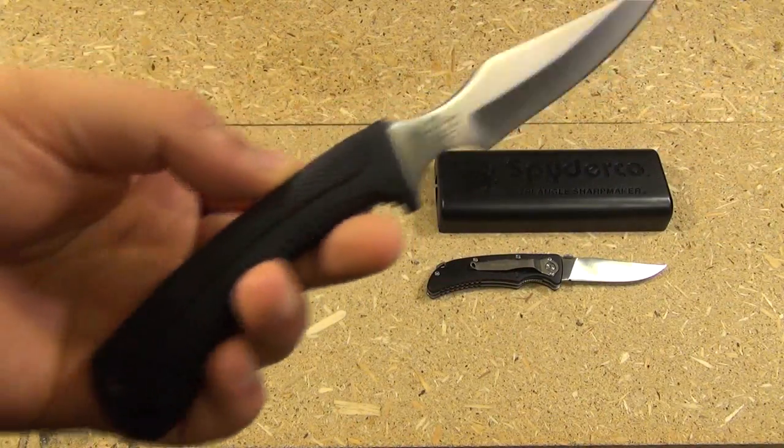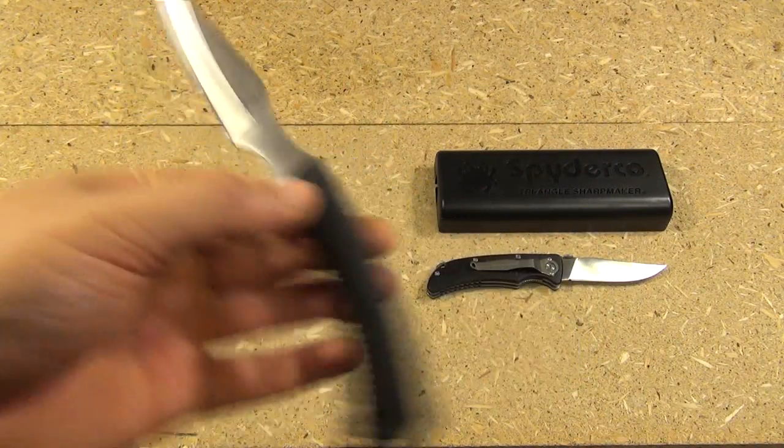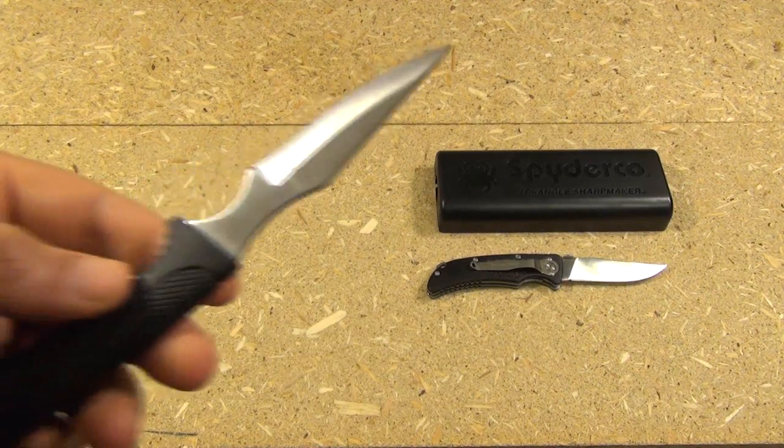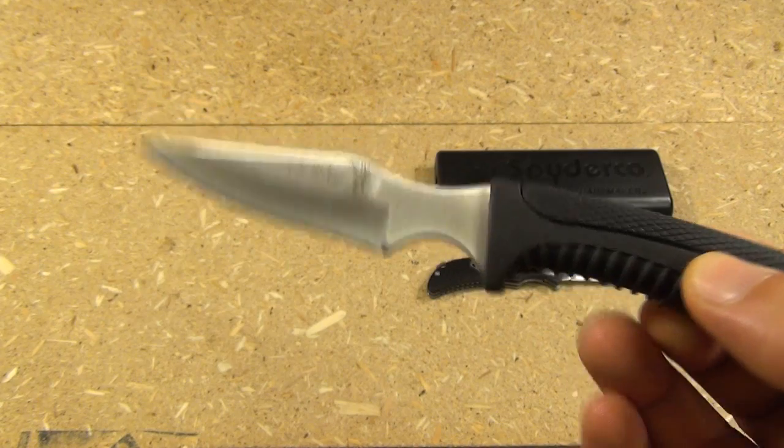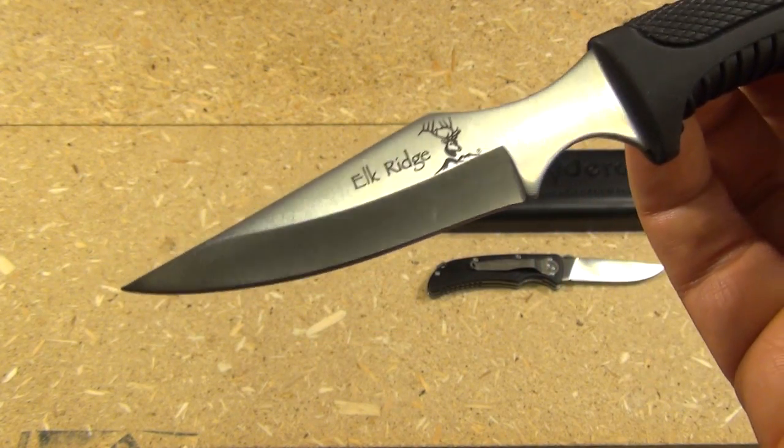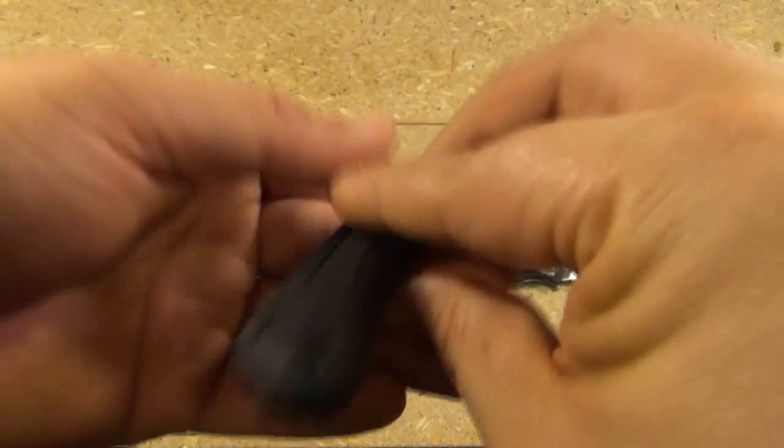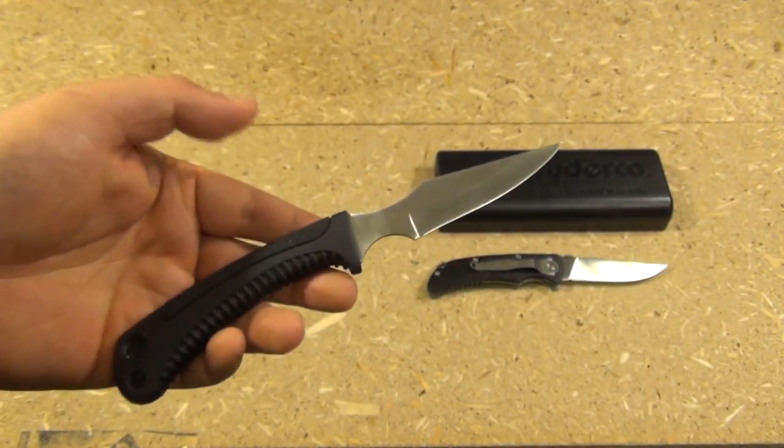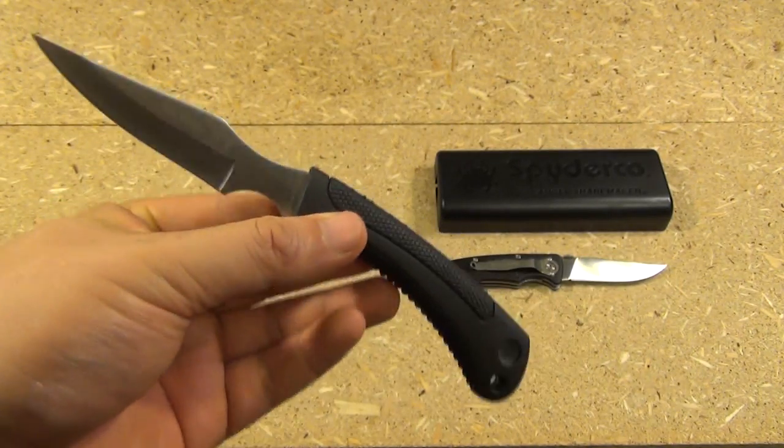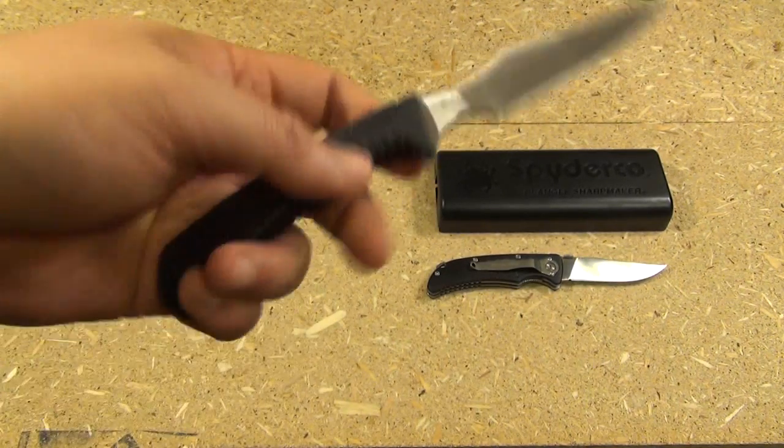Now, this knife came incredibly dull, and you saw it's basically a nice little scalpel now. This is an Elk Ridge knife, ER261. It actually came in a three-pack with a fillet knife and a gut hook type knife.